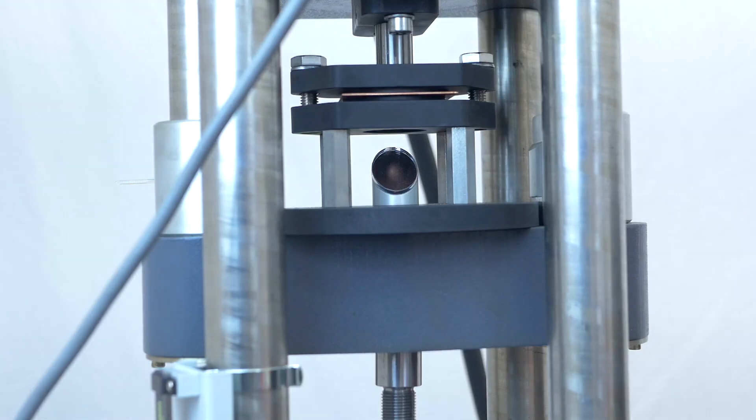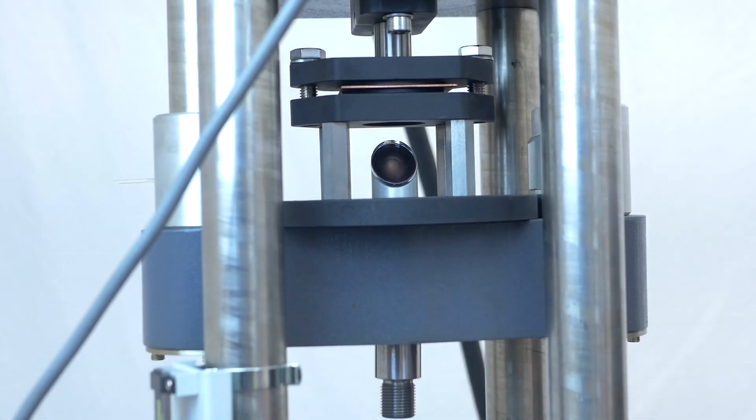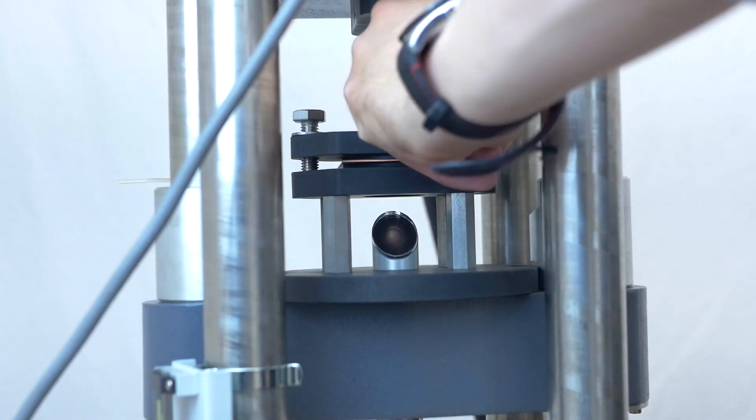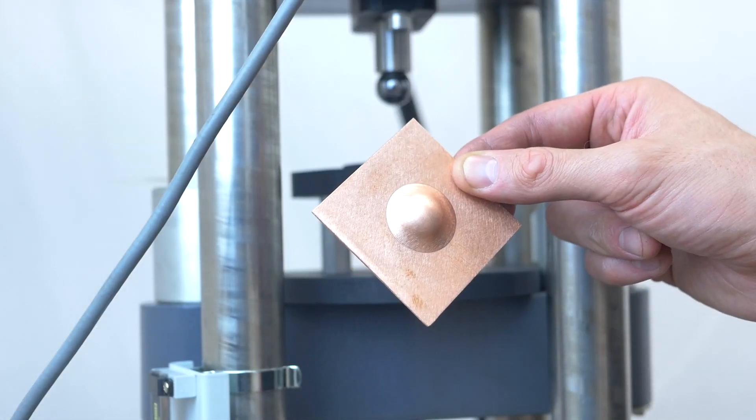This works by pressing a smooth, hard sphere into a sheet material until it ruptures. At that point, the specimen is removed and measured.